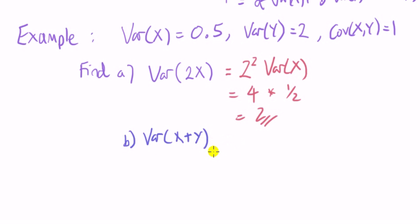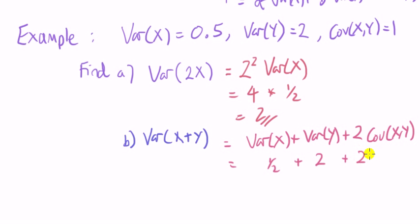Next, the variance of x plus y. Okay, the rule says that this is the variance of x plus the variance of y plus two times the covariance of x, y. Put in the numbers, variance of x, a half, variance of y, two plus two times the covariance of x, y which is one, four and a half.